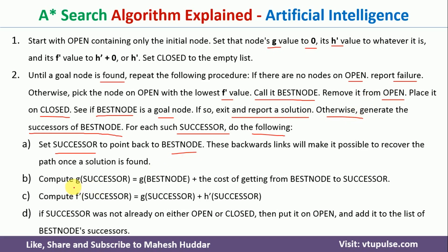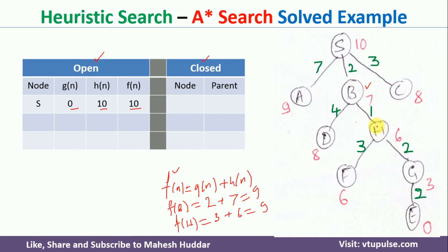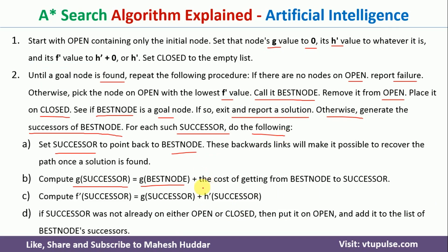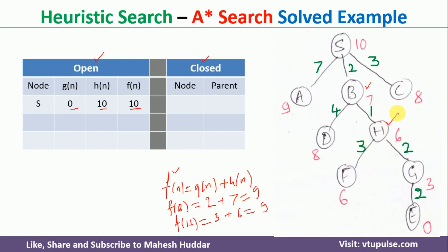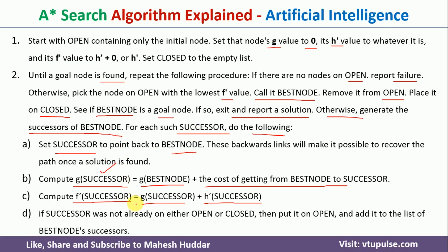That is the logic used here. First calculate g(successor) = g(best node) + actual cost to reach from best node to successor. Then add the heuristic value to get f(successor). That is why the equation is divided into two parts: first g(successor), then f(successor).